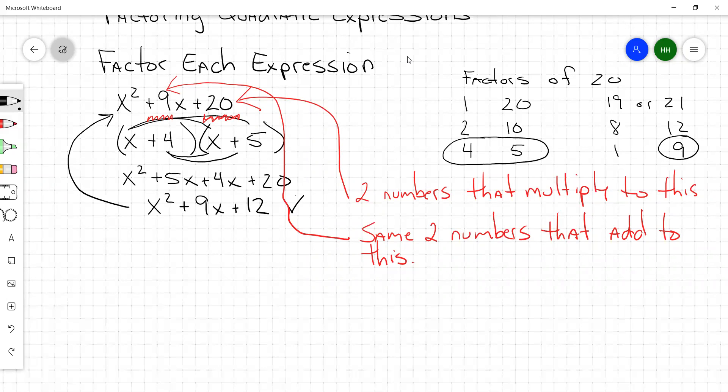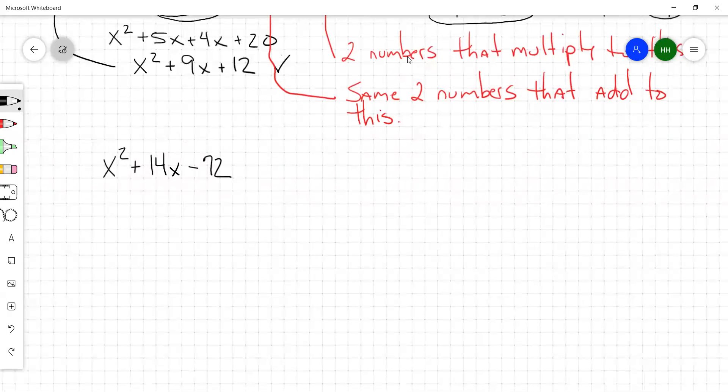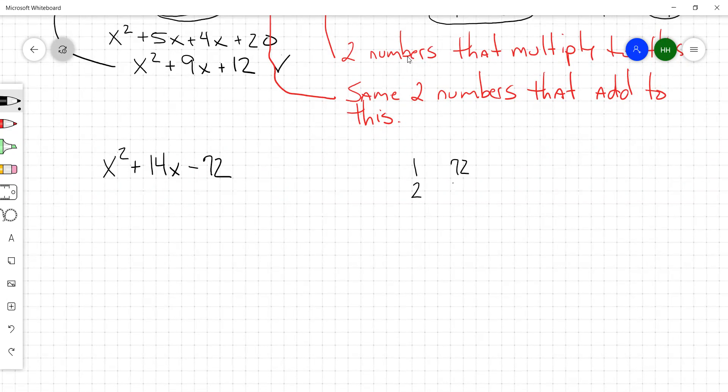So if we take x squared plus 14x minus 72, factors of 72. That's a 1 and a 72, 2 and 36. Is 3 going to 72? I think so. 72 divided by 3, yep, 3 and 24. 72 divided by 4, 4 and 18. There we go.